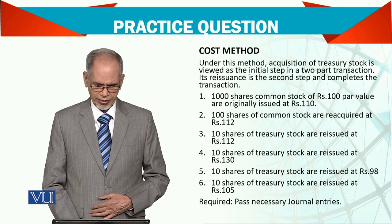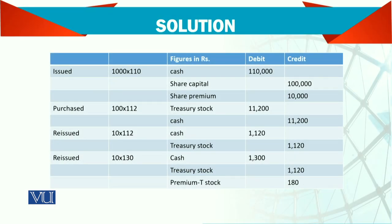Number one — Issued. Look at 1000 shares at Rs. 110 per share: Cash is debited, Share Capital is credited, and Share Premium is credited. The cash comes in and equity accounts — Share Capital and Share Premium — are credited.